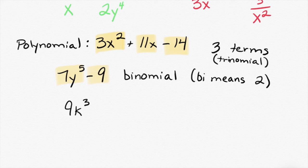How about this? How many terms in that polynomial? It has one term and it's called a monomial. The one term is 9k cubed, monomial because mono means one.